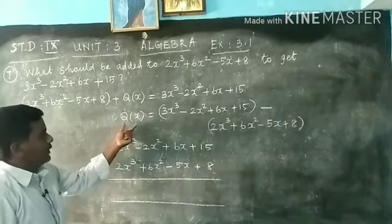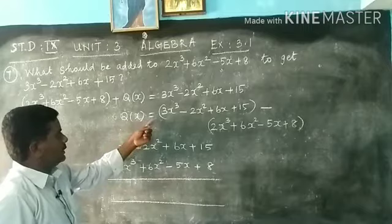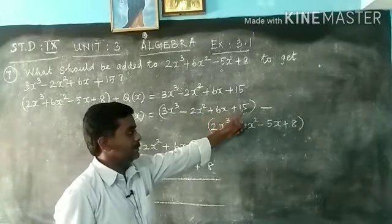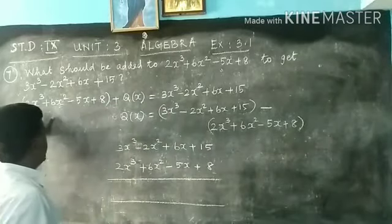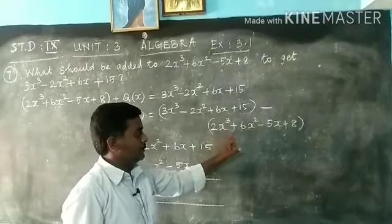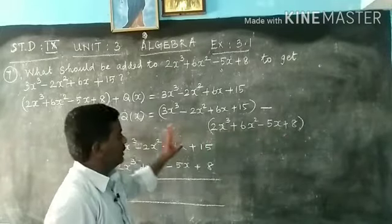Now, with the unknown value on left hand side, Q(x) is equal to 3x² minus 2x² plus 6x² plus 6x² plus 3. Transpose this polynomial into right hand side minus 2x² plus 6x² minus yx plus 8.